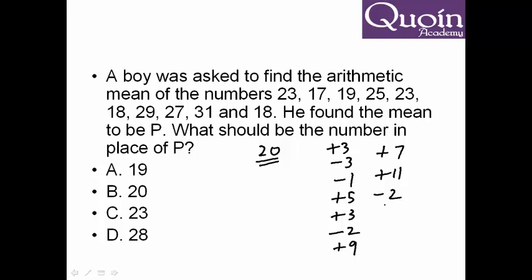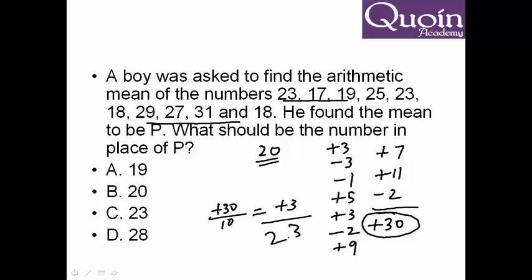If you total all this, this comes to plus 30. But this plus 30 is above the average for 10 numbers. So it becomes plus 30 upon 10. Each number is plus 3 as compared to the average. So overall average becomes 20 plus 3, which is 23. So you get 23 as the answer.